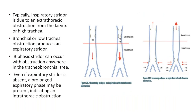Typically, inspiratory stridor is due to extrathoracic obstruction from the larynx or high trachea, whereas bronchial or lower tracheal obstruction produces expiratory stridor. Supraglottic or glottic obstruction leads to inspiratory stridor. Lower airway obstruction leads to expiratory stridor. Biphasic stridor can occur with obstruction anywhere in the trachea or bronchi. Even if expiratory stridor is absent, a prolonged expiratory phase may be present, indicating intrathoracic obstruction — as seen in asthma, where obstruction of terminal bronchioles causes a prolonged expiratory phase.